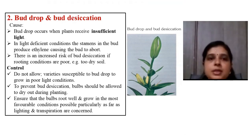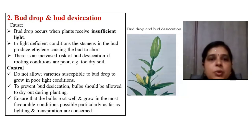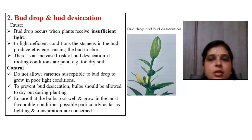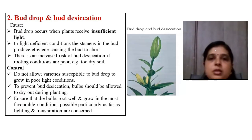Dormancy in lilium is due to the accumulation of abscisic acid inside the bulb. At the time of harvest, abscisic acid levels are very high in the bulb, preventing sprouting and growth. Therefore, the bulb is kept in cold storage to break dormancy. Before cold storage, after harvesting, the bulb is dipped in Bavistin solution, allowed to dry for some period, and then kept in cold storage in plastic trays.